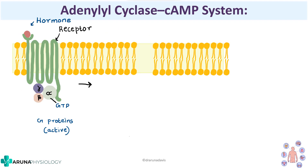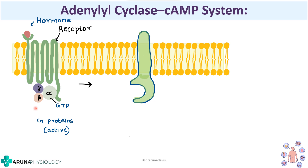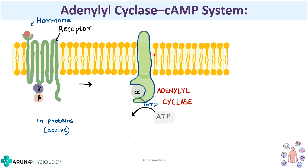These second messengers are usually involved with G protein-coupled receptors. When a hormone binds to a G protein-coupled receptor, forming the hormone-receptor complex, the G proteins are activated. The alpha subunit will dissociate and attach to an enzyme. In the adenylyl cyclase cAMP system, this enzyme is adenylyl cyclase, which is activated and causes conversion of ATP to cAMP.